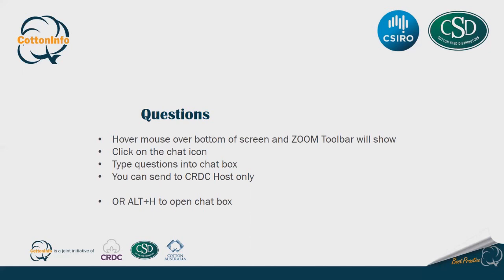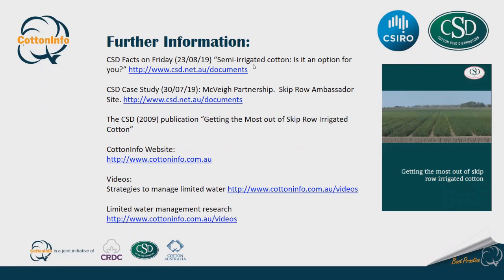I'll conclude and direct you to some resources. There was a good Fact on Friday published on the 23rd looking at semi-irrigated cotton: is it an option for you? There's also the link to the McVeigh Partnership case study. The publication 'Getting the Most Out of Skip Row Irrigated Cotton' is currently being updated within CSD - it's not on the CSD website at the moment but will be available as an updated publication. The Cotton Info website also has videos looking at strategies to manage limited water and research updates.